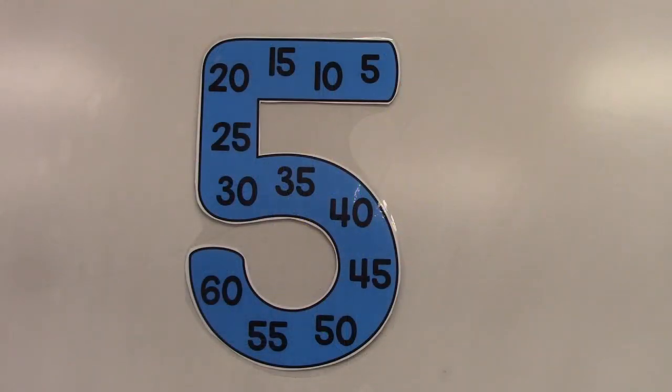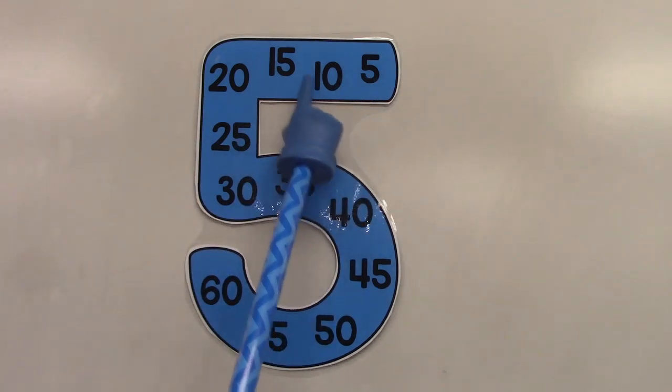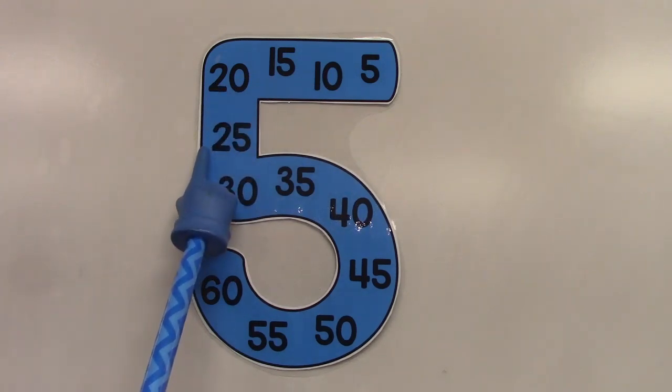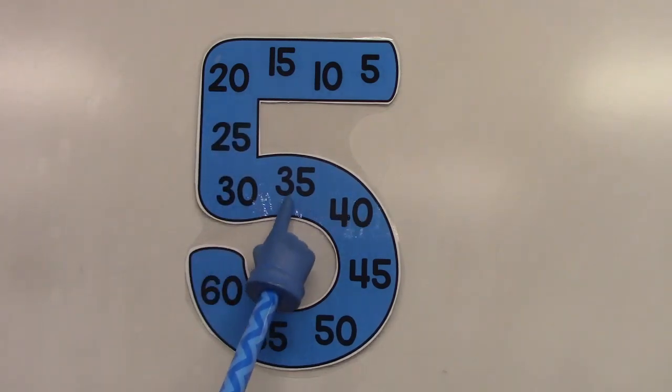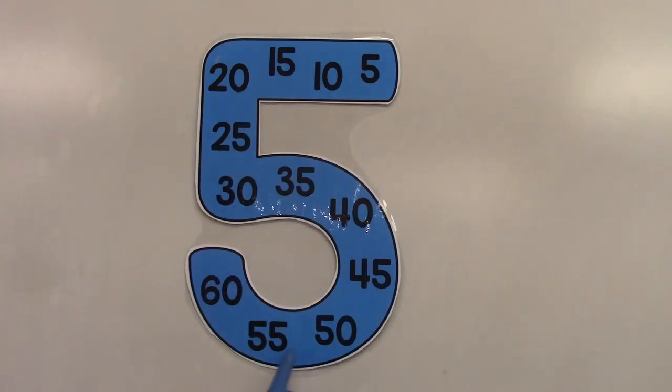Let's skip count by the number five. Learning to skip count by five is very important because we need it when we're telling time and when we're counting money. Let's begin. 5, 10, 15, 20, 25, 30, 35, 40, 45, 50, 55, 60.